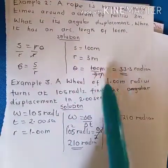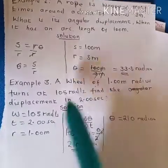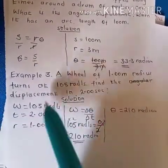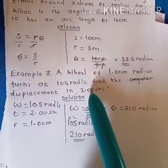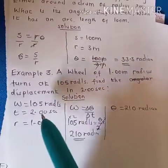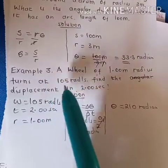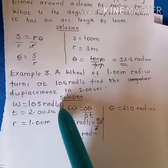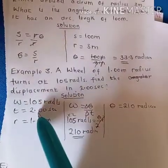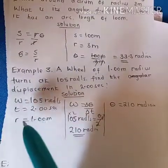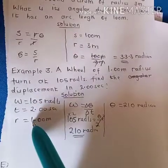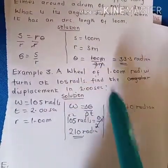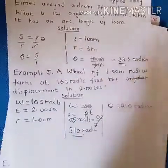Example 3: A wheel of 1.0 centimeter radius turns at 105 radians per second. Find the displacement in 2 seconds. Given angular velocity of 105 radians per second, time 2 seconds, and radius 1.0 centimeter, we need to find the displacement arc length.